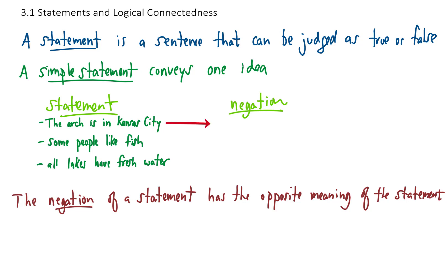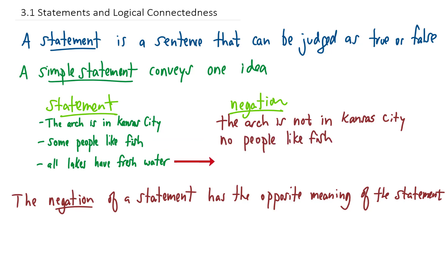For example, if somebody told you that the arch is in Kansas City and you wanted to disagree, you would say the arch is not in Kansas City. If somebody told you some people like fish and you wanted to take the other side, you would say no people like fish. And if somebody said all lakes have fresh water and you wanted to disagree, you would say some lakes don't have fresh water.